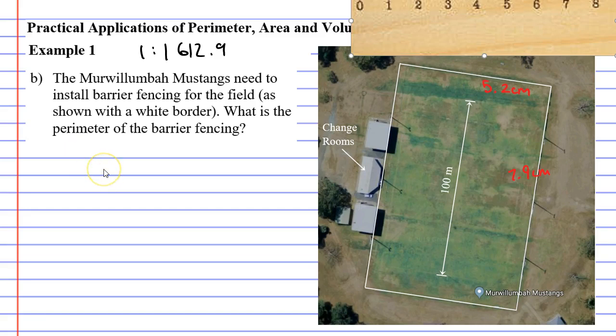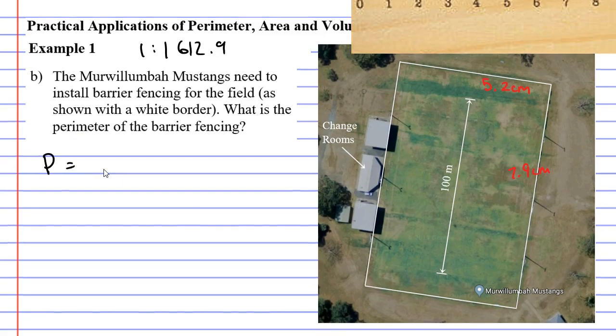If we want to find the perimeter, or capital P, we need to add up four sides. So two of the sides were 7.9 centimetres, and two of the sides were 5.2 centimetres. When you add all of these sides together, you get 26.2 centimetres.